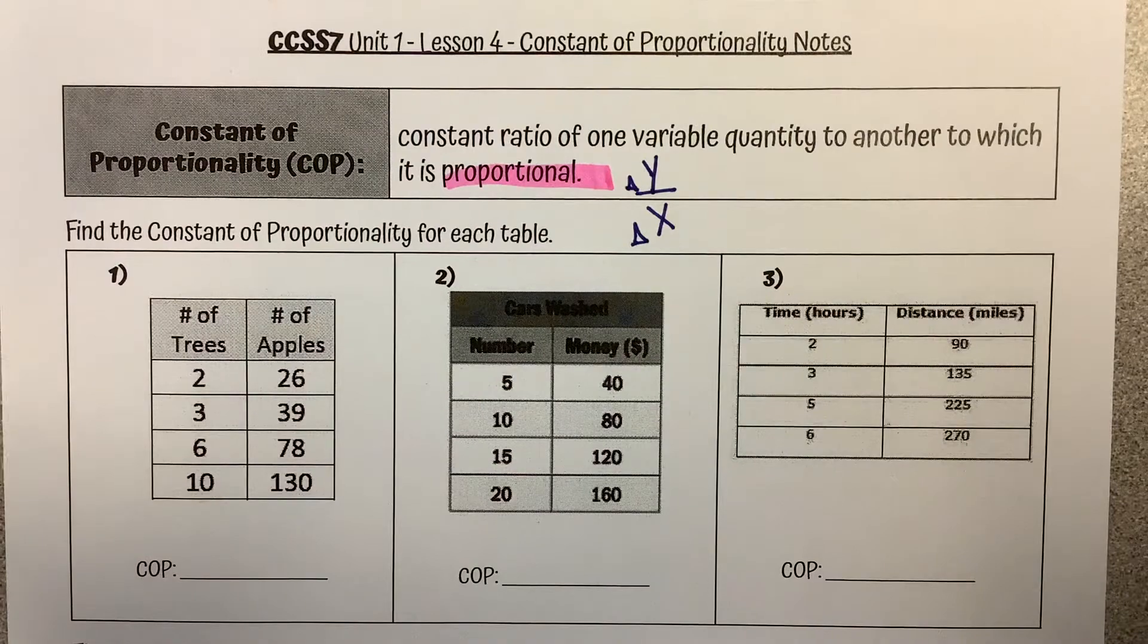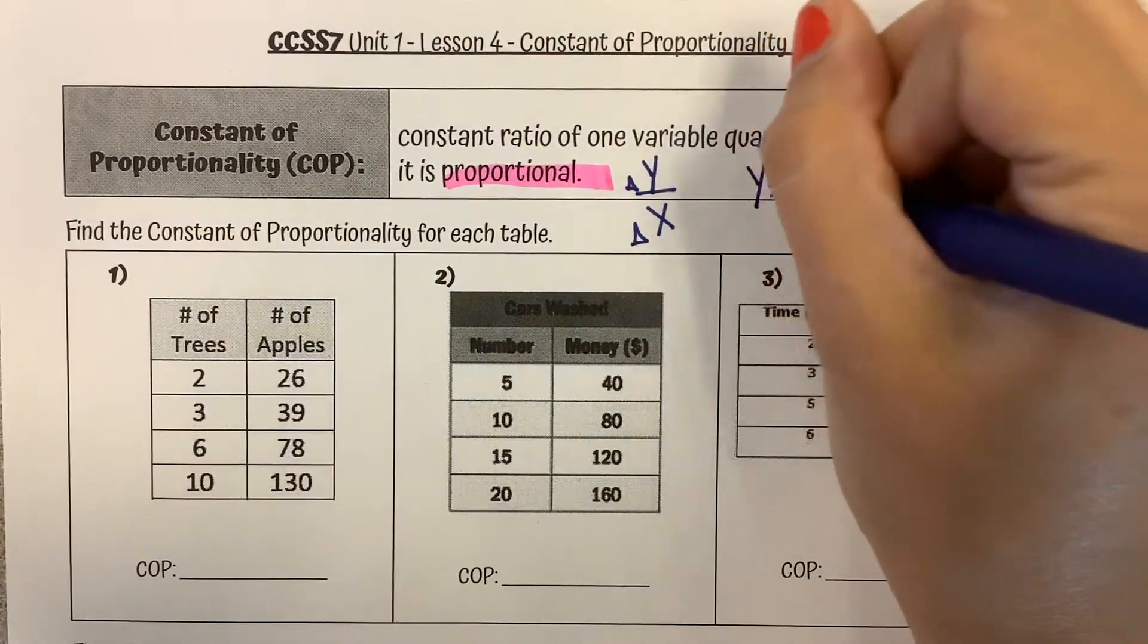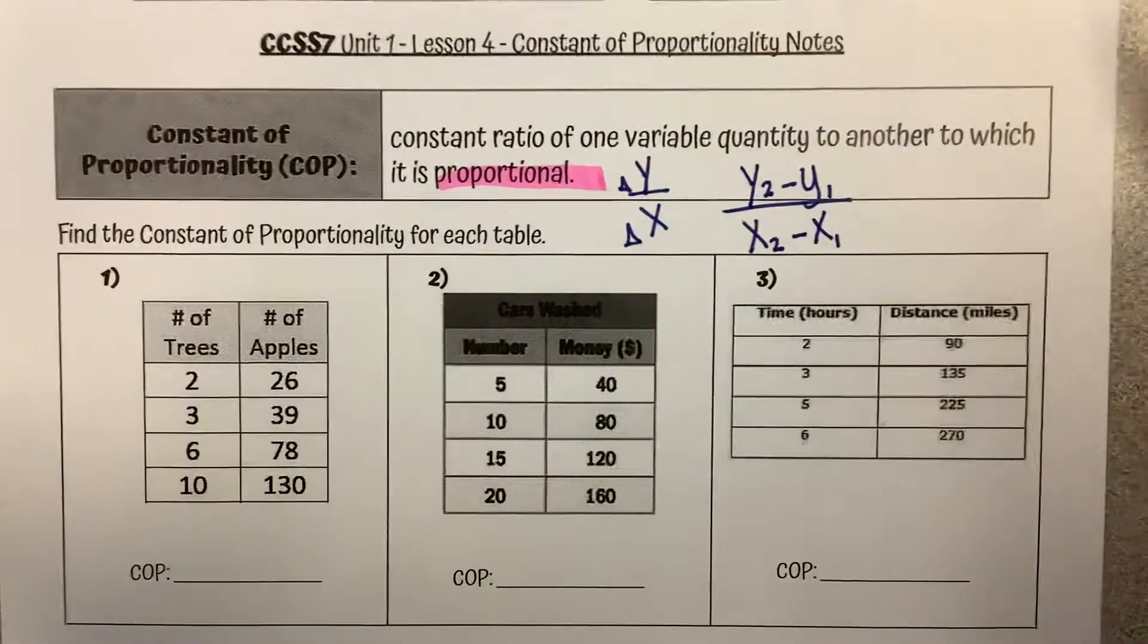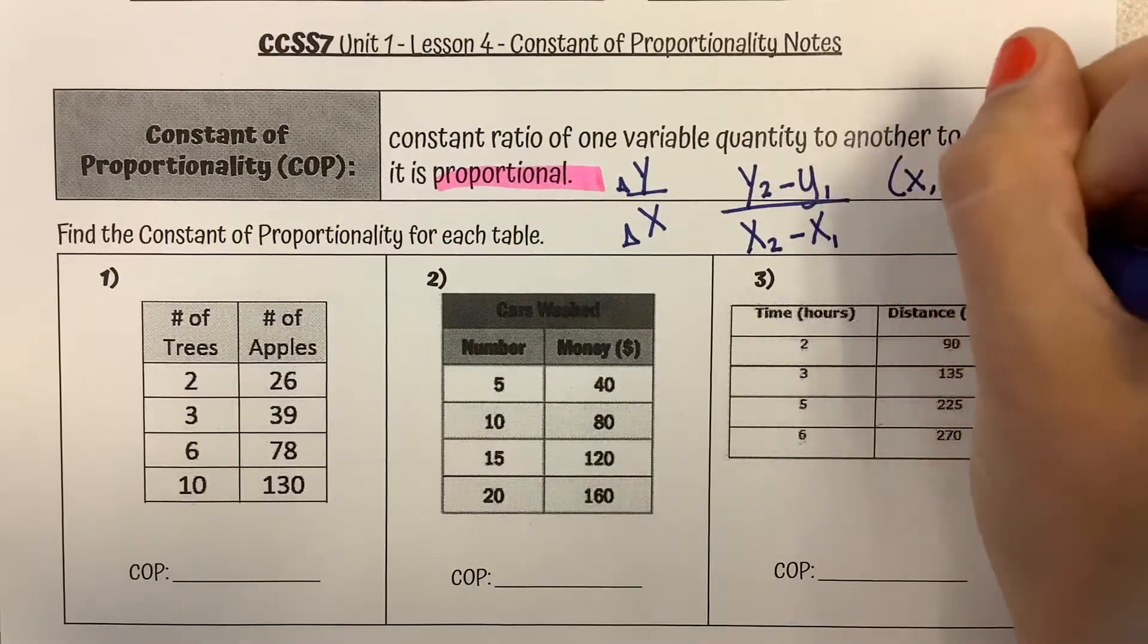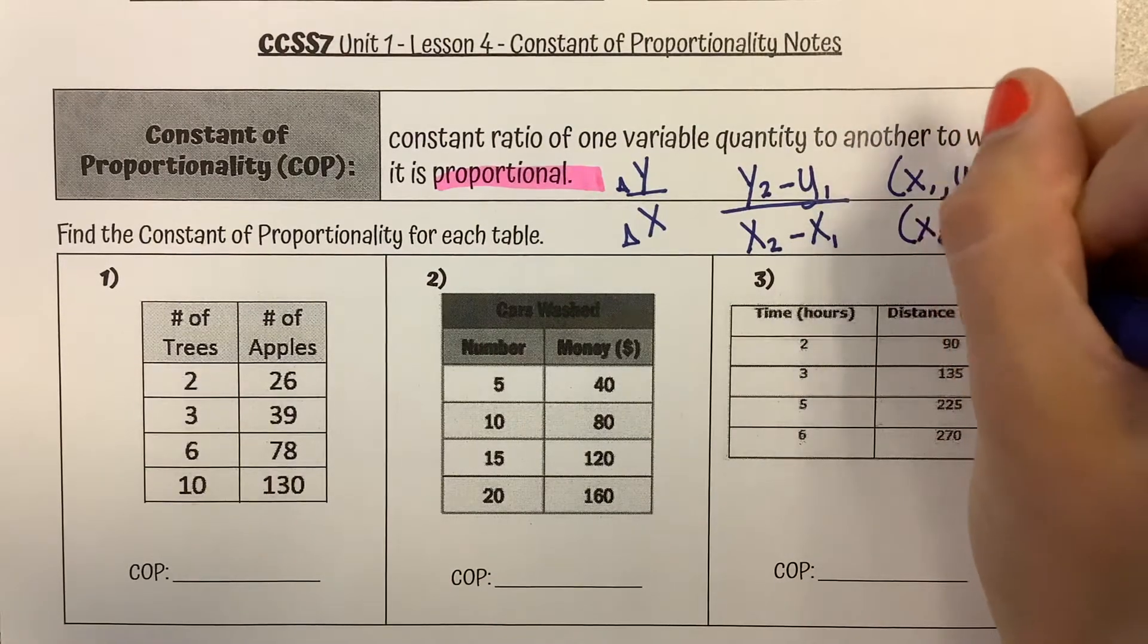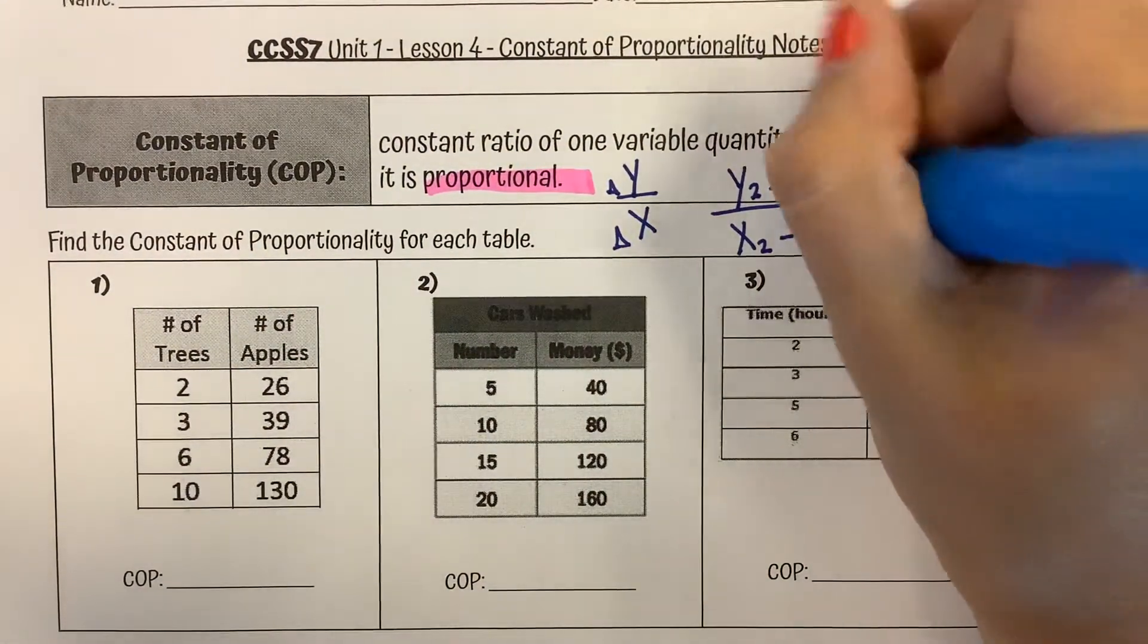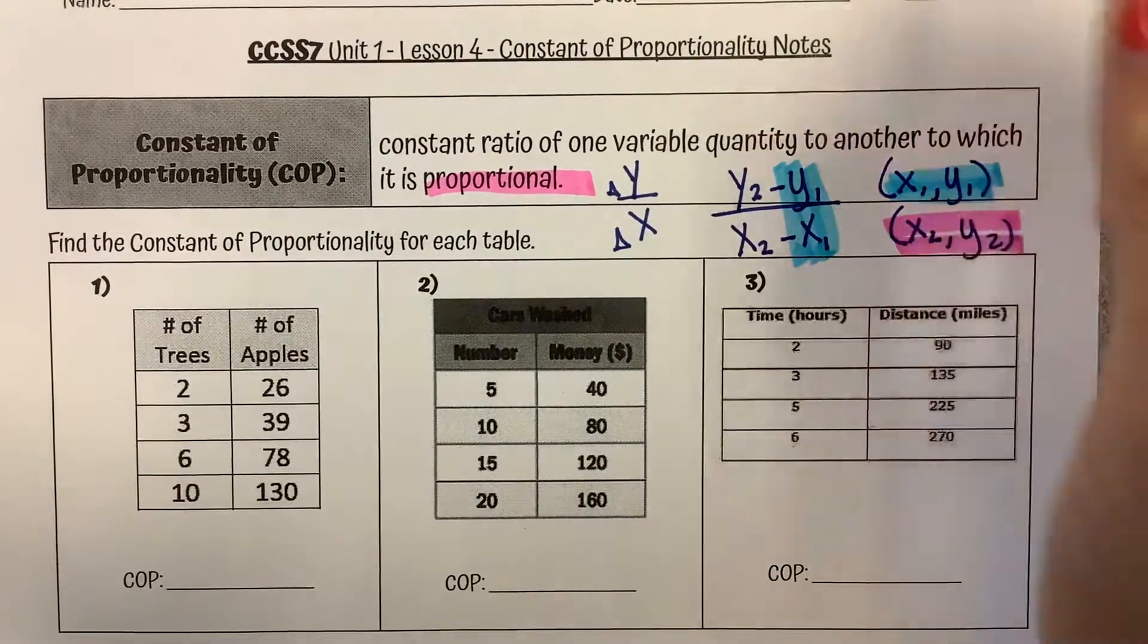So when we are looking at it in a table, I'm going to use y2 minus y1 over x2 minus x1. That does not matter which x or y. It's just saying that we have an ordered pair that has an x and a y, and we have a second ordered pair that is an x and a y. So here we have our first ordered pair, and here we have a second ordered pair.